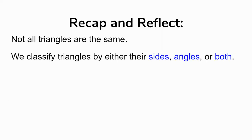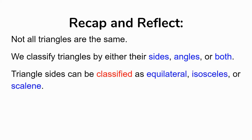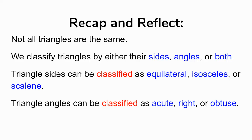Let's recap and reflect on what we learned in this lesson. Not all triangles are the same. We classify triangles by their sides, their angles, or both together. Sides are classified as equilateral, isosceles, or scalene. Angles are classified as acute, right, or obtuse. There are a lot of new vocabulary words here — equilateral, isosceles, scalene, acute, right, obtuse — so it will take some time to study, but if you put in the time, you're going to be awesome at classifying triangles.